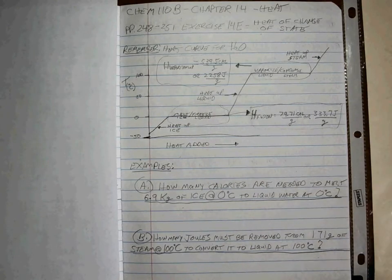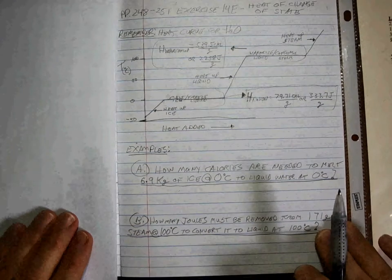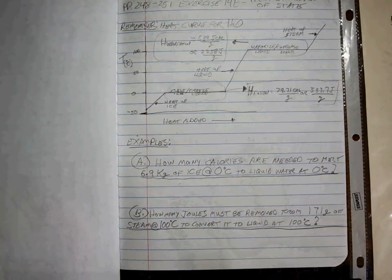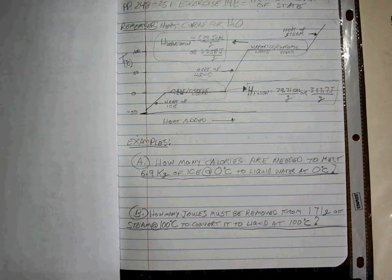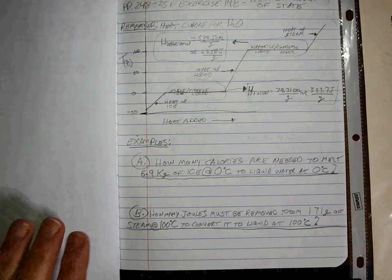All right, so having that information, these problems are really quite simple. So let's take a look at it. Hit pause, I give you 10 minutes maximum to solve these. All you got to do is be careful with your sig figs and be careful with your units. All right, have at it, good luck, come on back.